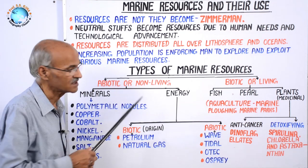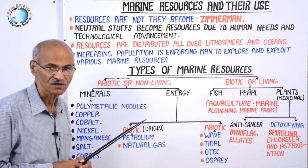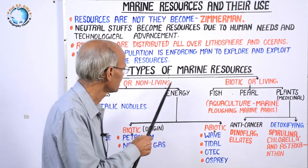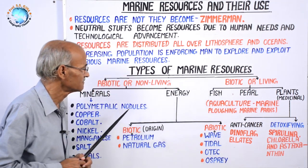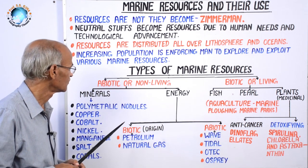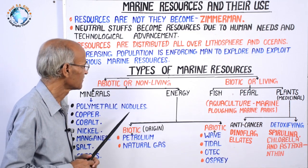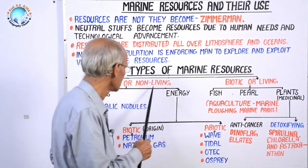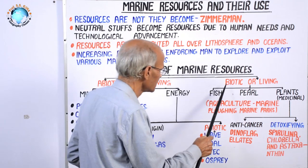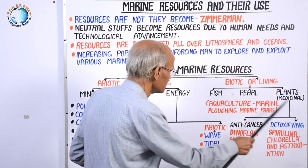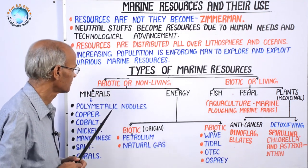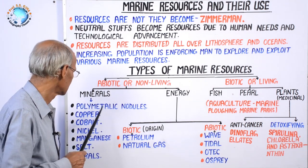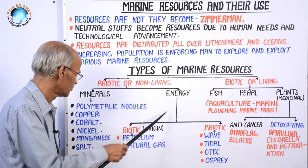After understanding the meaning of neutral stuff, resources, and land and marine resources, let us learn about the types of marine resources. There are a number of resources in oceans which, for the sake of convenience, can be put in two large groups: number one, abiotic or non-living resources, and number two, biotic or living resources. In abiotic or non-living resources, there are again two classes: number one, mineral deposits, and number two, energy.